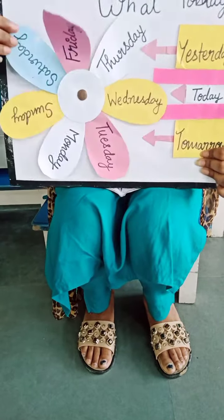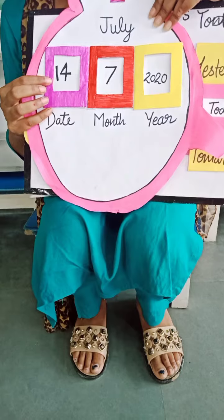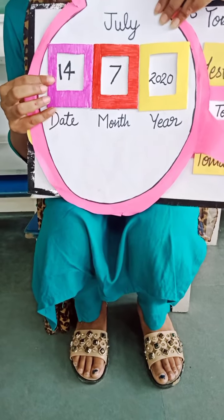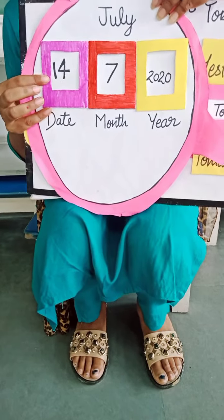So tell me students, what is the date today? Today is 14th July 2020. Now tell me, what was the date yesterday? Yesterday was 13th July 2020. Now tell me, what will be the date tomorrow? Tomorrow will be 15th July 2020.